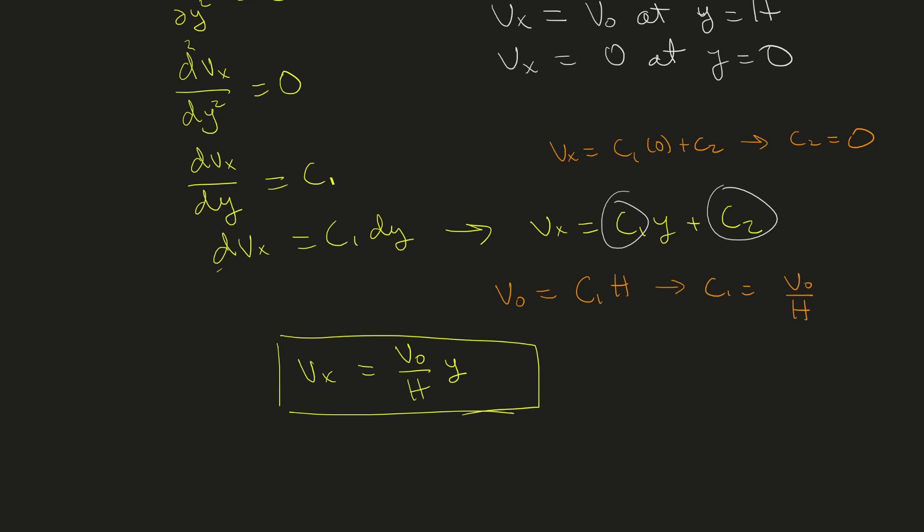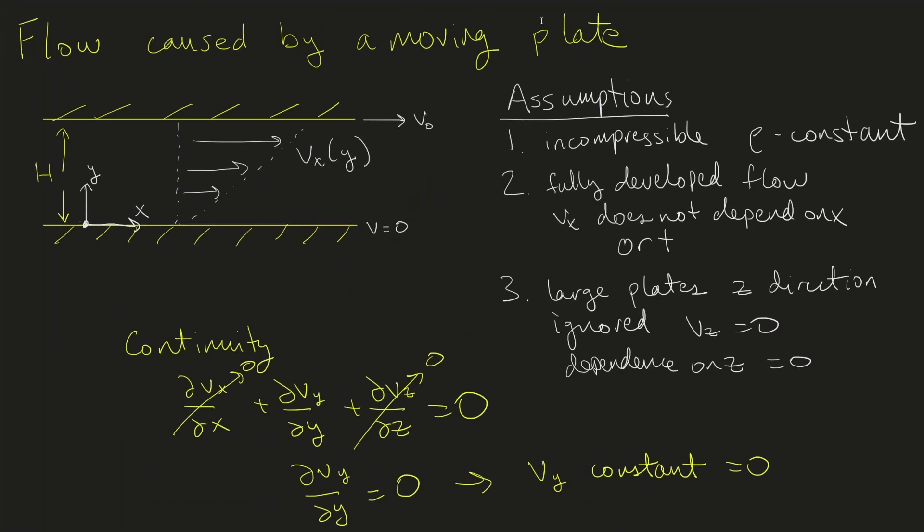Note that this is a linear dependence on y. When y equals zero, the flow equals zero. As y increases, we steadily increase up to the point where y = h and velocity equals v₀. Returning to the picture, we have a linear velocity profile shown in these dotted lines.